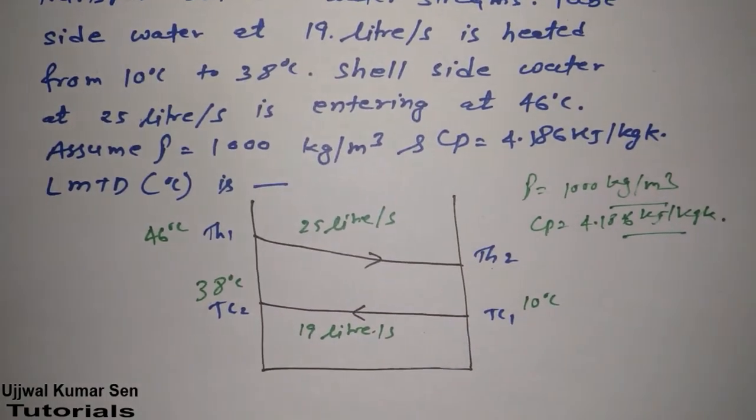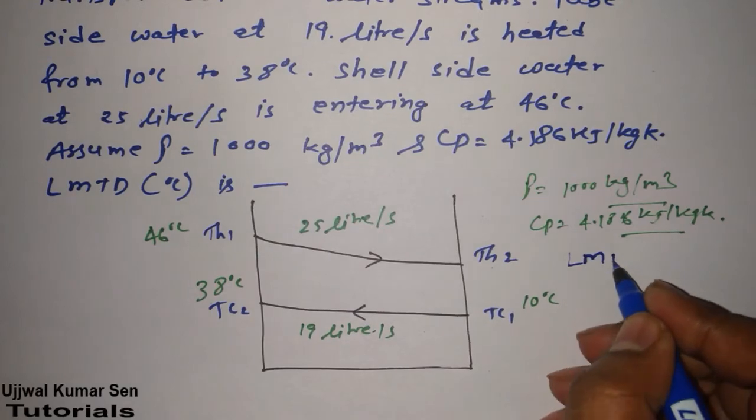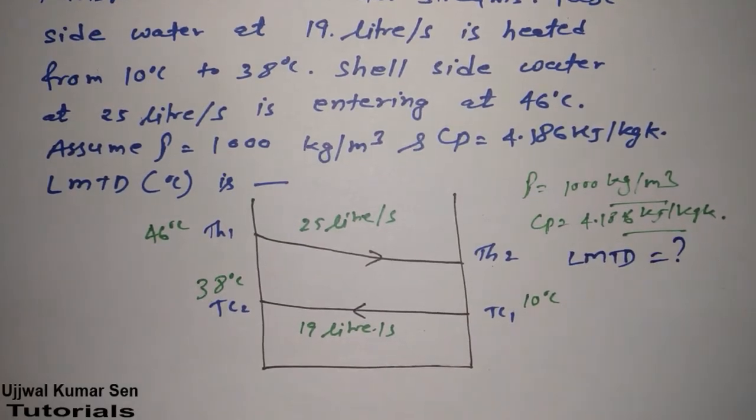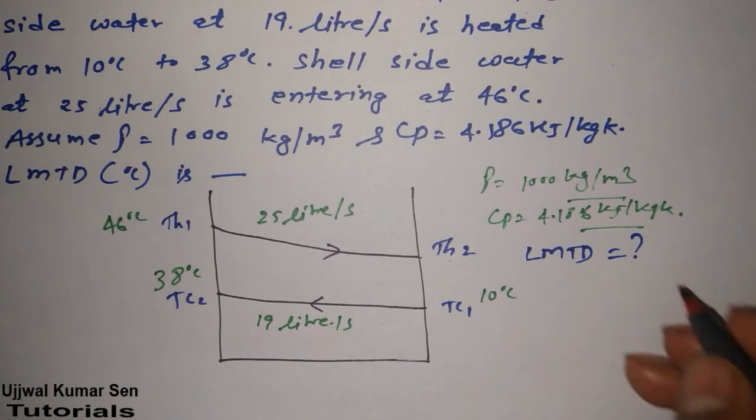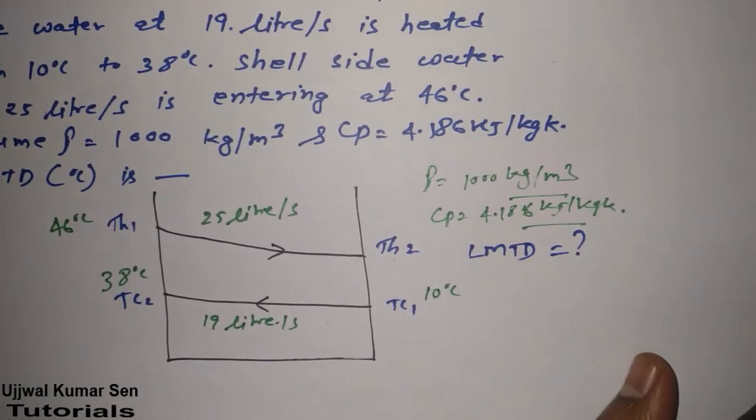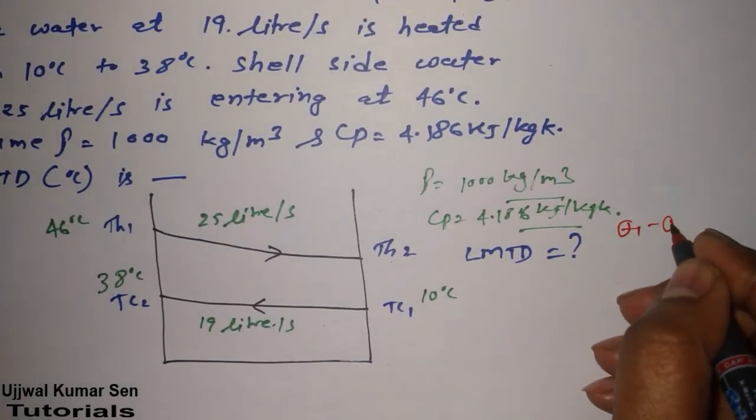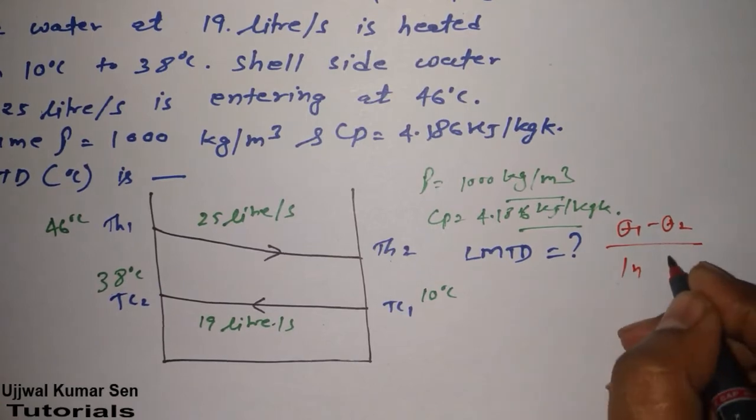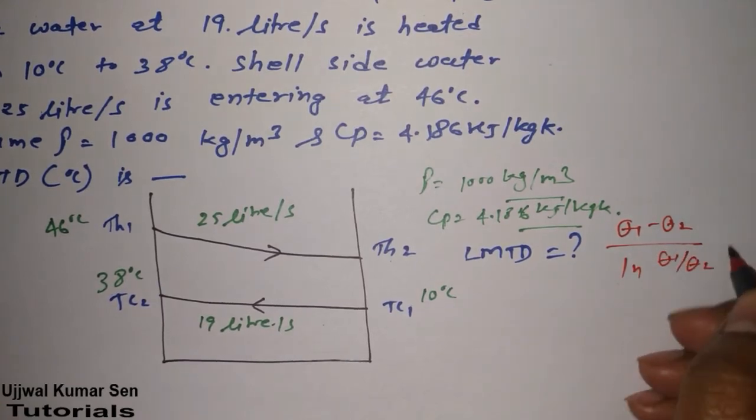So what we have to find out is basically what is LMTD. We know that the formula for LMTD is theta 1 minus theta 2 by natural log theta 1 by theta 2. We know this.